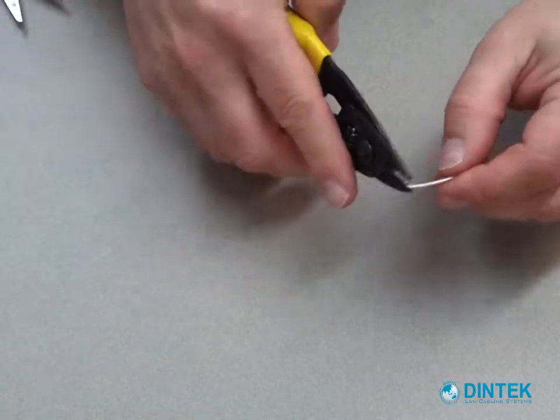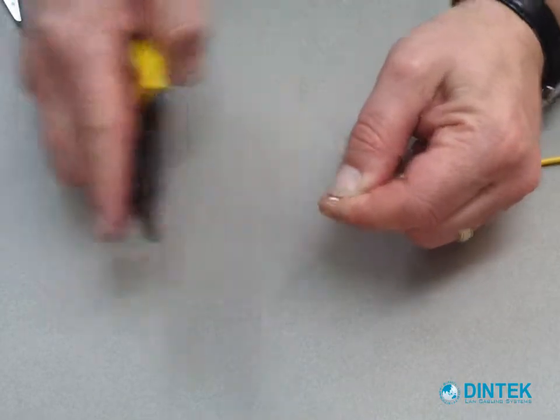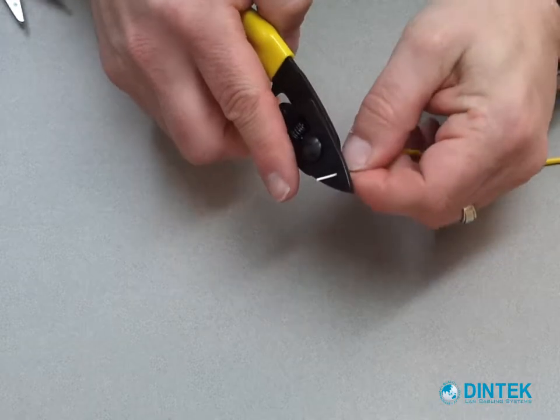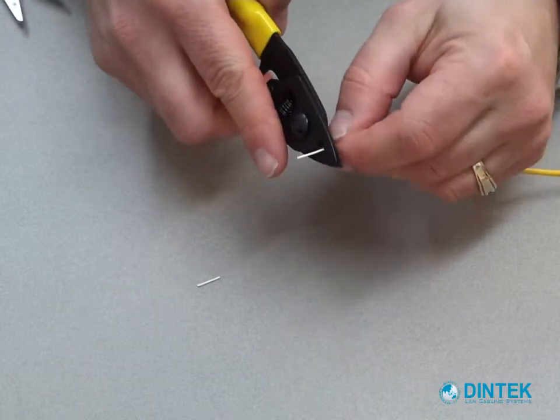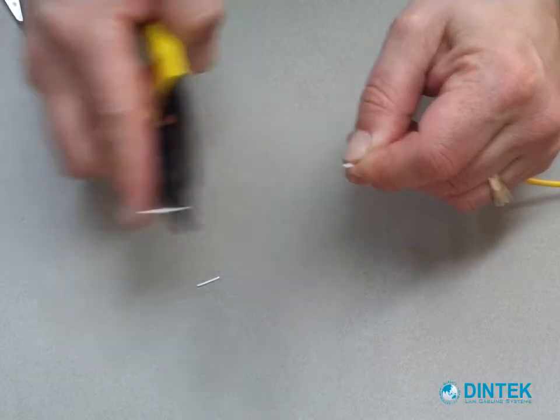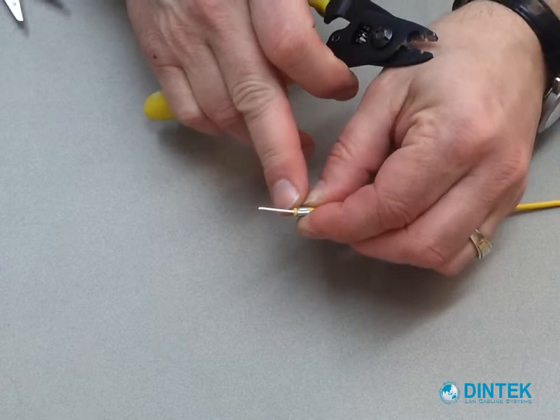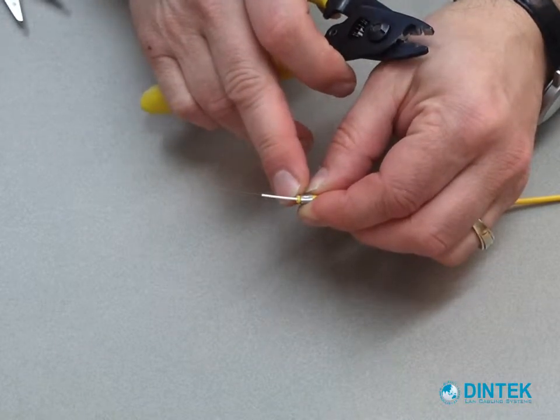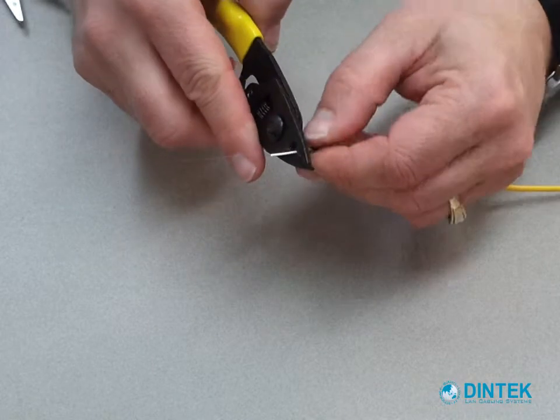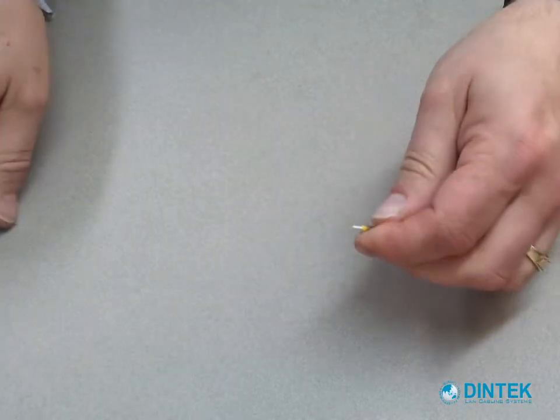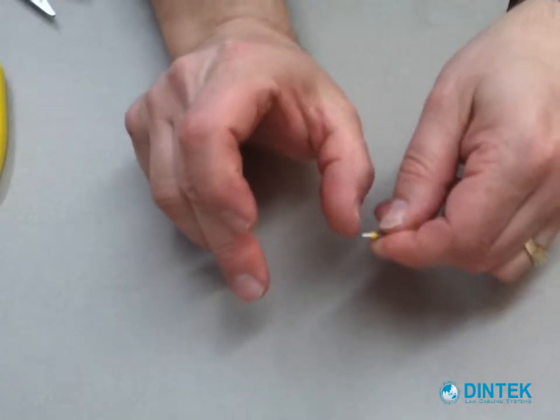Next we take our strippers and start taking the buffer off, taking it about a centimeter at a time. Don't take too much at once as it will cause the fiber to break. Leave about 5 mils of secondary buffer before the sheath. So we have got about 50 mils of fiber there.